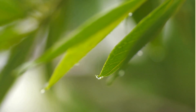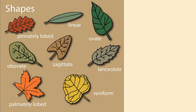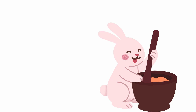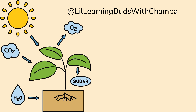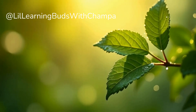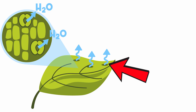Leaves are the green parts that grow on the stem of a plant. They come in a lot of shapes and sizes and help the plant stay healthy. Leaves help the plant make food using sunlight, air, and water — this process is called photosynthesis. They also help new plants grow and let water out through tiny holes — this process is called transpiration.